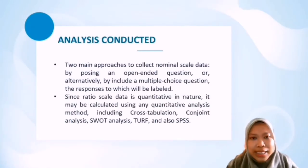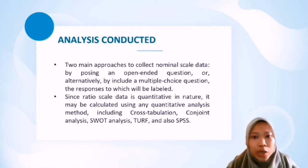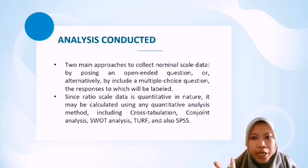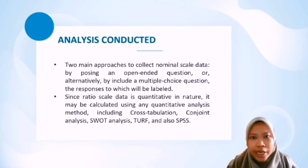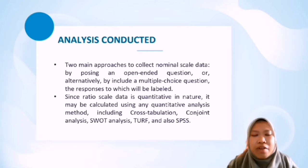In an analysis context, there are two main approaches to collect nominal scale data: by posing an open-ended question, where responses can later be coded to a chosen number of labels, or alternatively by including a multiple choice question whose responses will be labeled. Both times, percentage or the mode will be used to analyze selected data. Meanwhile, since ratio scale data is quantitative in nature, it may be calculated using any quantitative analysis method, including cross-tabulation, conjoint analysis, SWOT analysis, TURF and also SPSS, which we are currently using for this task.